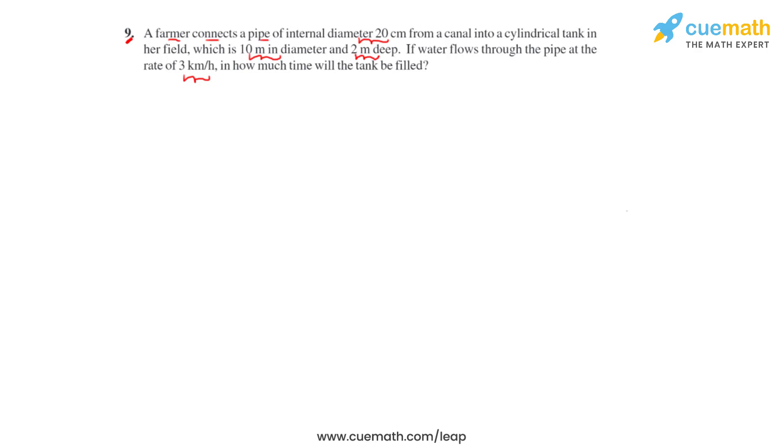This is how the cylindrical tank looks like. The height of the cylindrical tank is 2 meters and the diameter is 10 meters. And this is the cylindrical pipe through which the water is flowing. The water is flowing with the speed of 3 km per hour and the diameter of the cylindrical pipe is 20 centimeters.